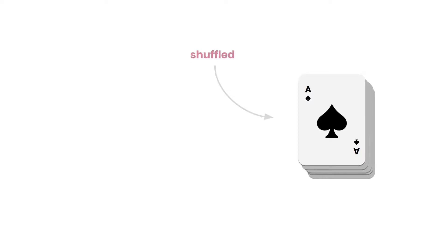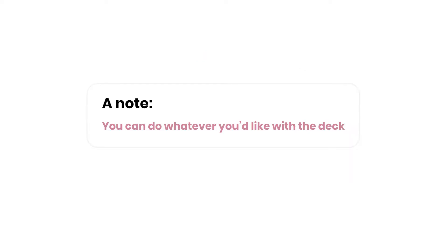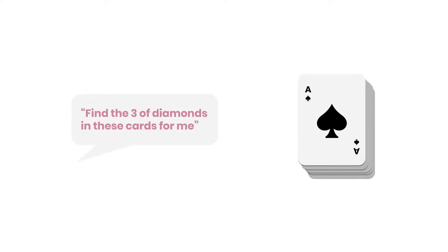The best way to describe linear search is to consider a pile of cards. On the right we have a shuffled pile of cards all in some random order. You can do whatever you like with these cards — look at them, move them around — they're in your hands and you can do whatever you want to accomplish the task I'm about to ask.